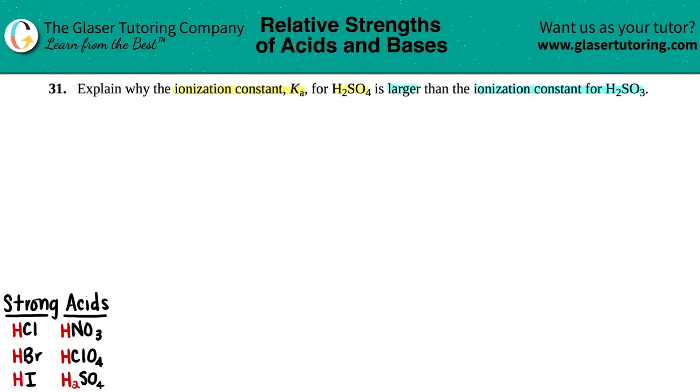Okay, so there can be a couple of different answers here depending on where we want to go down this track. Basically what they're saying in general is that the Ka value for H2SO4 is larger, so it's greater than the Ka value of H2SO3.